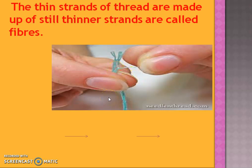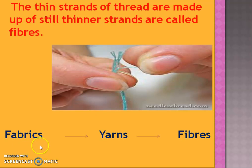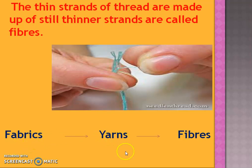By doing these activities we find that a fabric is made of yarns arranged together, and yarn is made up of fibers. So: fabric is made of yarns, and yarn is made of fibers.